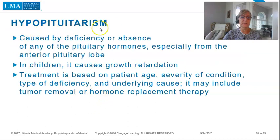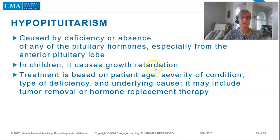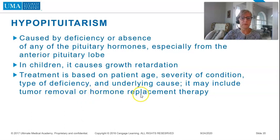Hypopituitarism is caused by deficiency or absence of any of the pituitary hormones, especially from the anterior pituitary lobe. In children, it causes growth retardation. Treatment is based on patient age, severity of condition, type of deficiency, and underlying cause, and may include tumor removal or hormone replacement therapy.